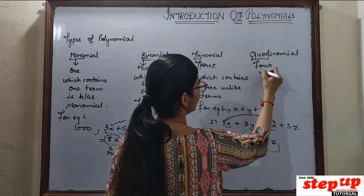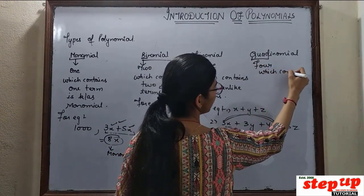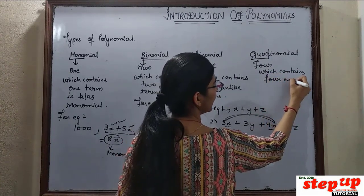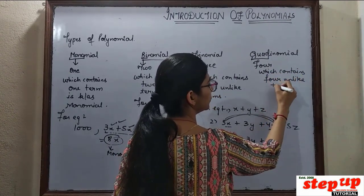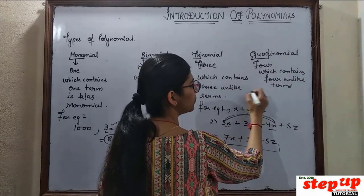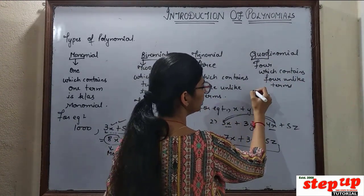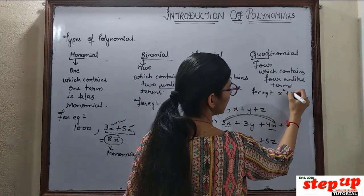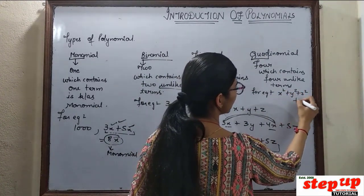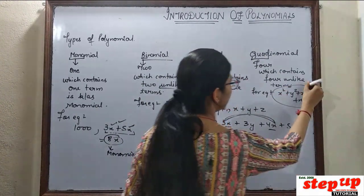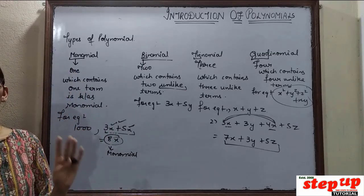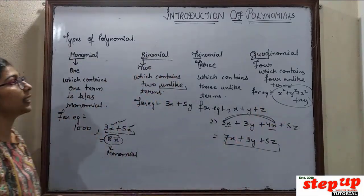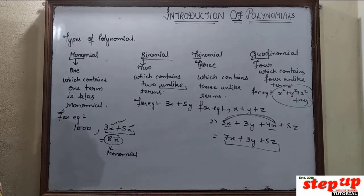Quadrinomial — which contains 4 unlike terms. For example, x² plus y² plus z² plus xy — all terms are different. So this can be called quadrinomial. These are your types of polynomial.